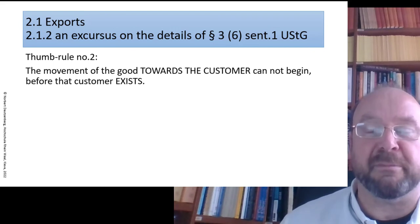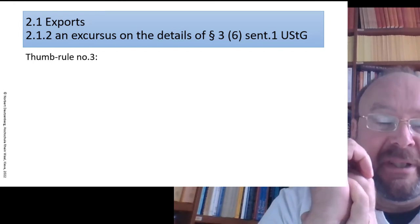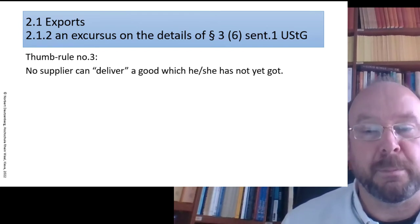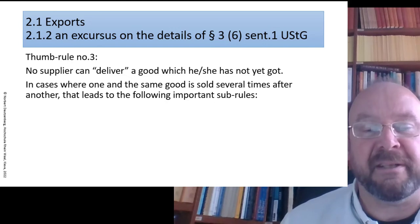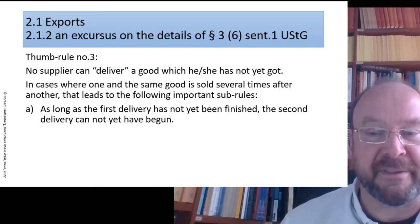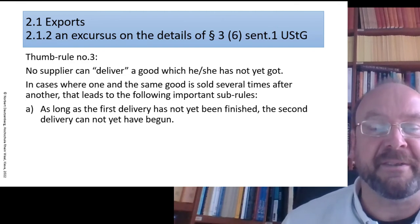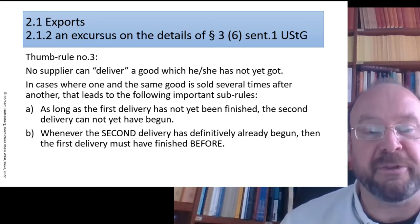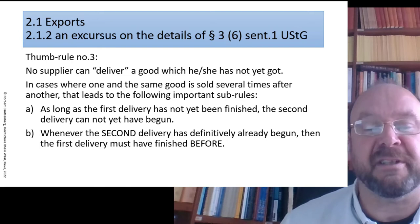That was thumb rule number two — let's sum it up. The movement of goods towards the customer cannot begin before that customer exists. Thumb rule number three: no supplier can deliver a good which they have not yet got. In cases where one and the same good is sold several times in succession, that leads to important sub-rules: as long as the first delivery has not yet been fully accomplished, the second delivery cannot yet have begun; and conversely, whenever the second delivery has definitively already begun, the first delivery must have been finished before.